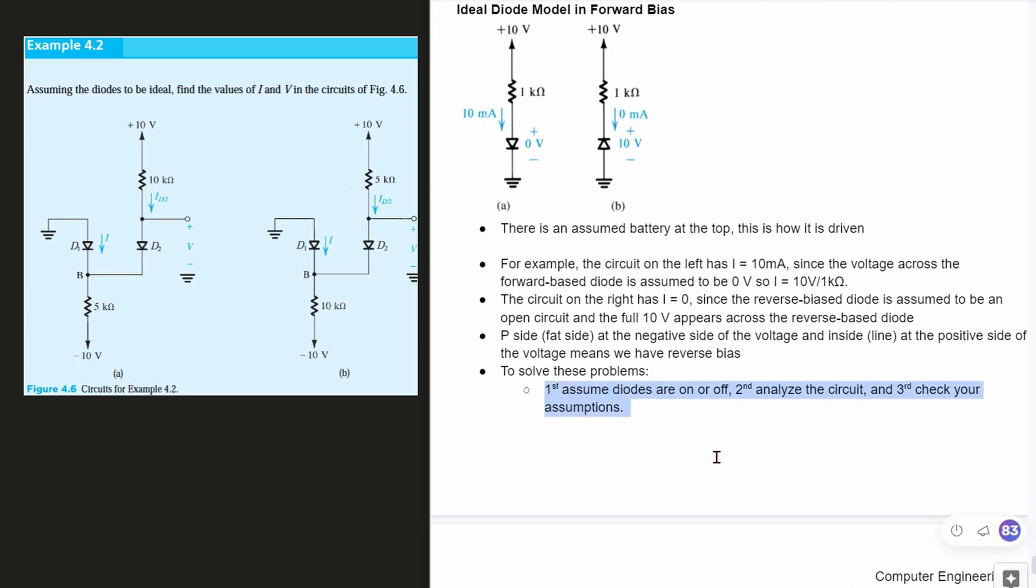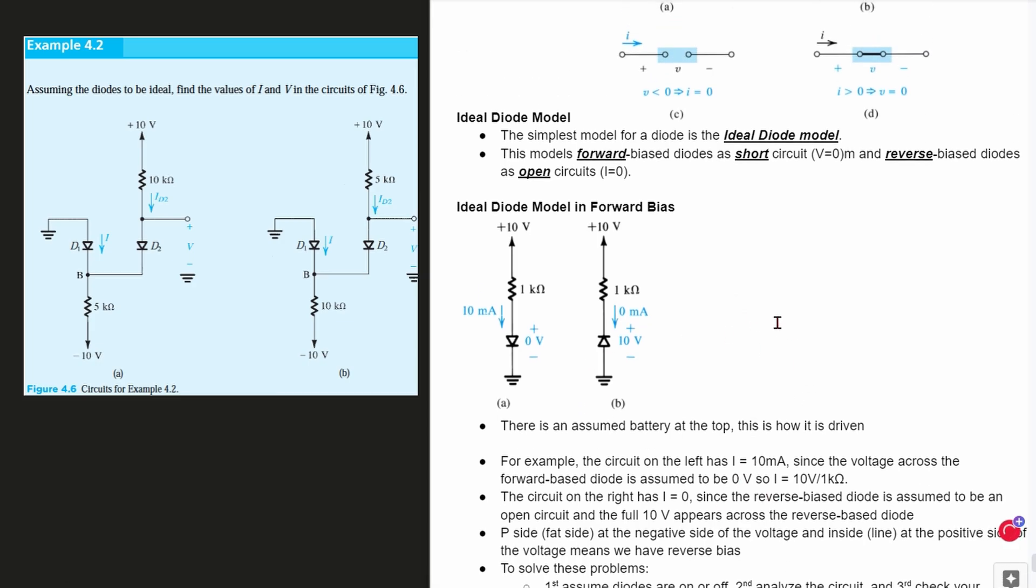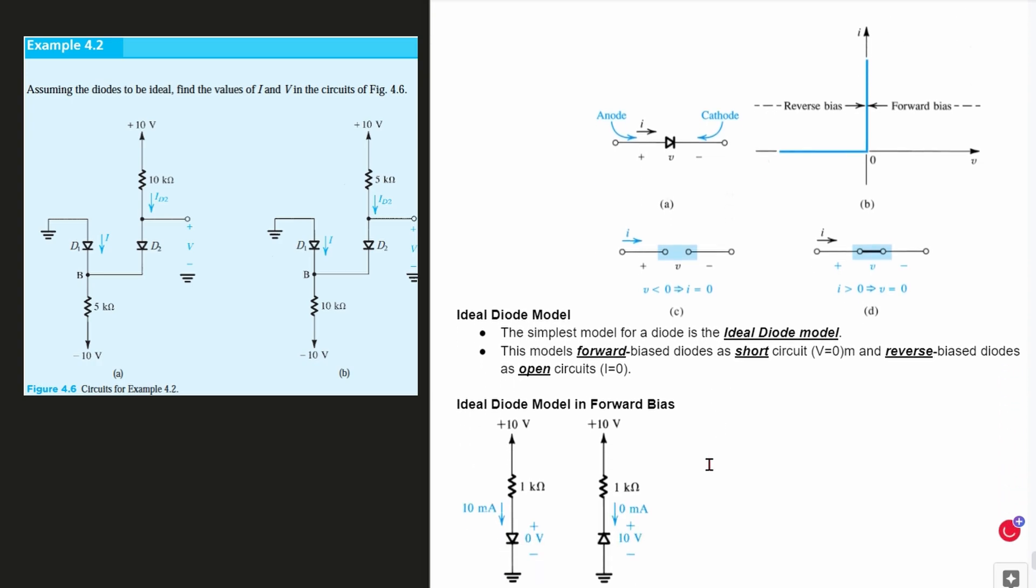The first step is to assume the diodes are either on or off. Next, we're going to analyze our circuit and then check our assumptions. If we check our assumptions and they are true, then that means we have done the problem correctly. So looking back up at our ideal diode model, we can look at these circuits. For part A, we are going to assume that they are both on.